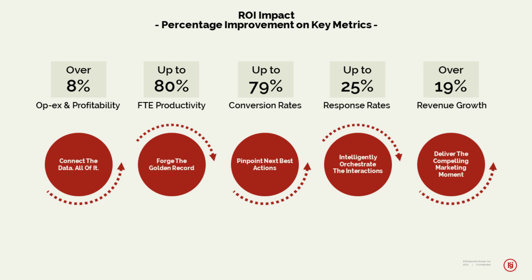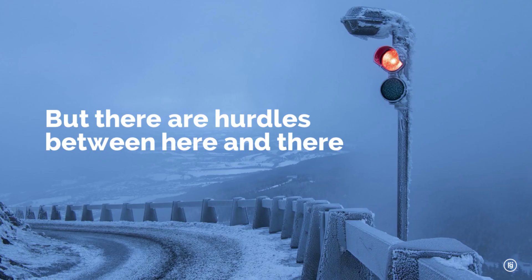We've seen quite a few different ROI levers depending on what you want to move. We've reduced operating expenses and increased profitability over 8% by connecting data with accurate matching — not under-matching or over-matching consumers. We've improved FTE efficiency by up to 80% in areas like data science, data analysis, IT resources, and marketing operations. We've increased response rates on real-time next best action conversion by up to 79%, up to 25% increase in response rates through intelligent channel orchestration, and we've driven revenue growth over 19%.